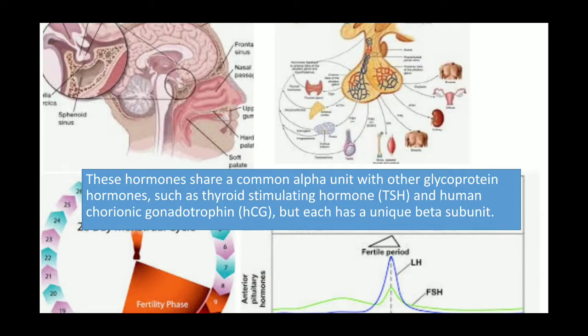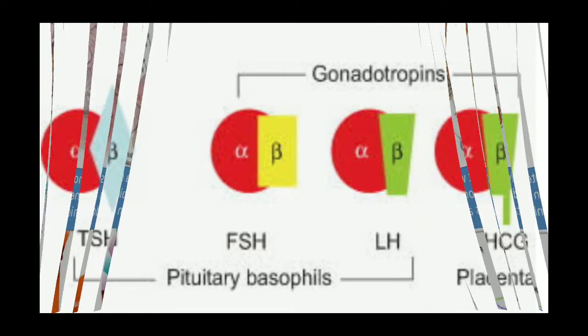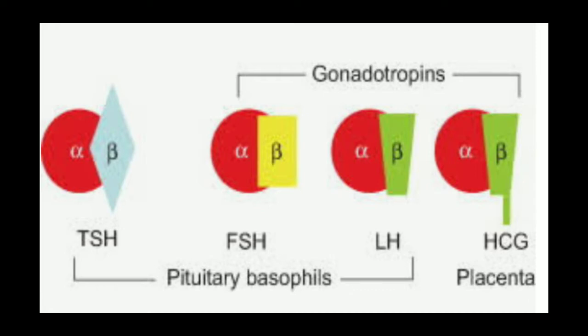It is important to know the structure of these hormones, because their structure explains cross-reactivity with other hormones. These hormones share a common alpha subunit with other glycoprotein hormones such as thyroid stimulating hormone (TSH) and human chorionic gonadotrophin (hCG), but each has a unique beta subunit.